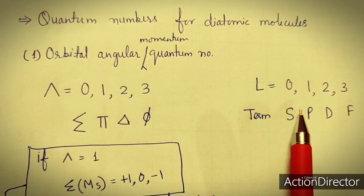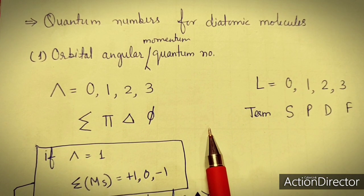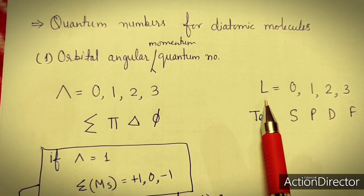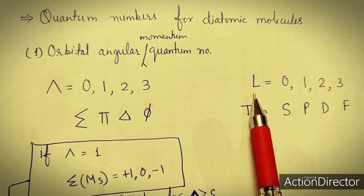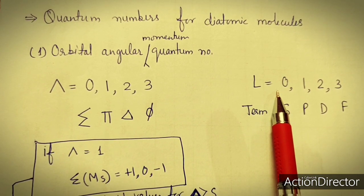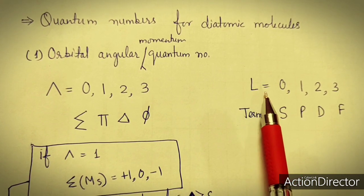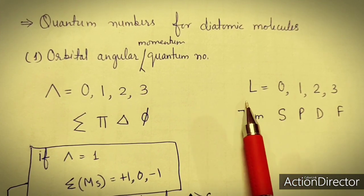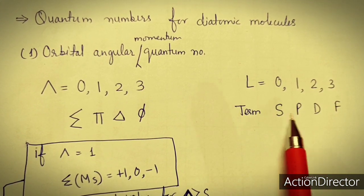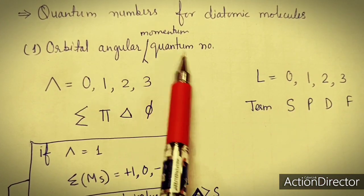In case of atomic terms, L is the total angular orbital momentum quantum number. If we add the orbital quantum number of each electron, we get capital L. So if L equals 0, 1, 2, or 3, then the term will be S, P, D, or F.